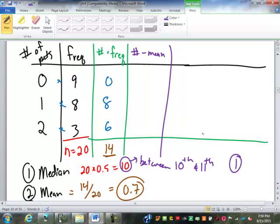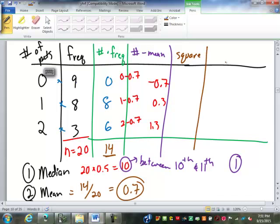I'll give you a couple more minutes to finish up the standard deviation. Okay. So the first step in the standard deviation is finding the mean, we already have that done. Second step is taking each value minus that mean. So zero minus point seven is going to be a negative point seven. One minus point seven is point three and two minus point seven is one point three. Third step is to square that number, negative point seven squared is point four nine. Point three squared is point nine and one point three squared is one point six nine.